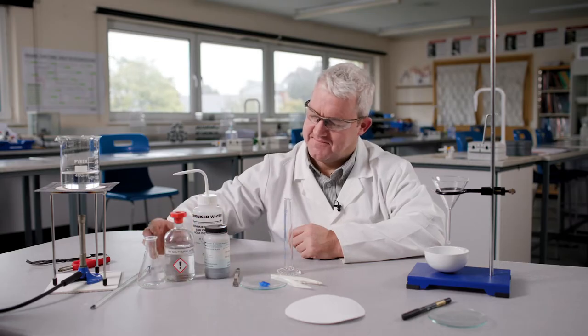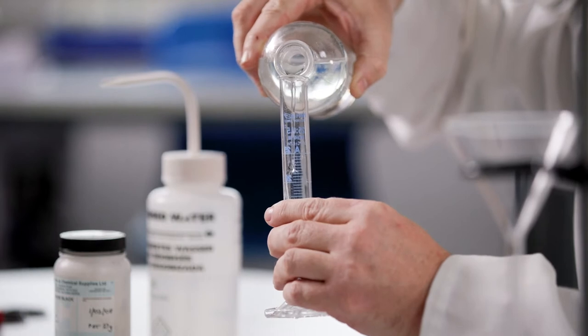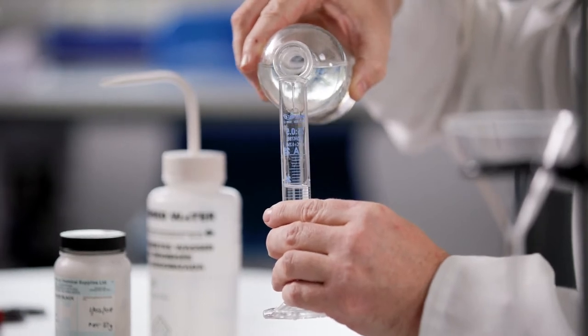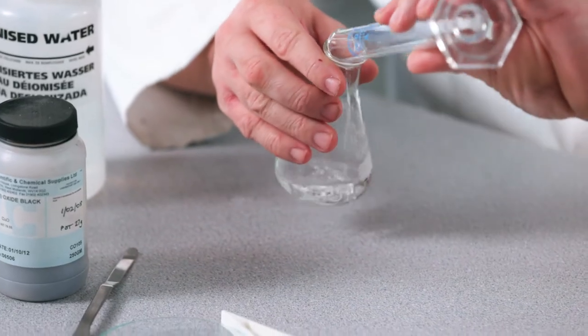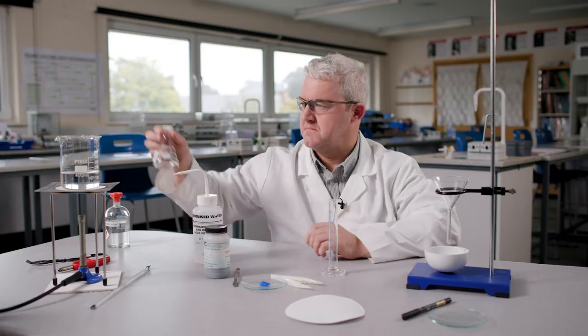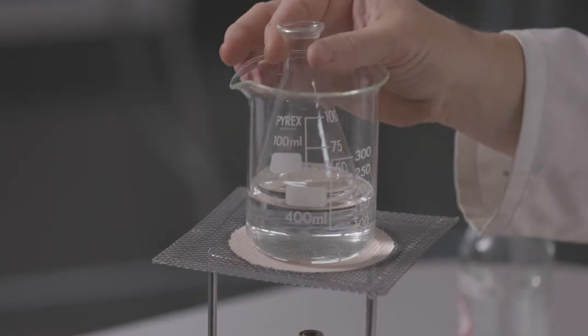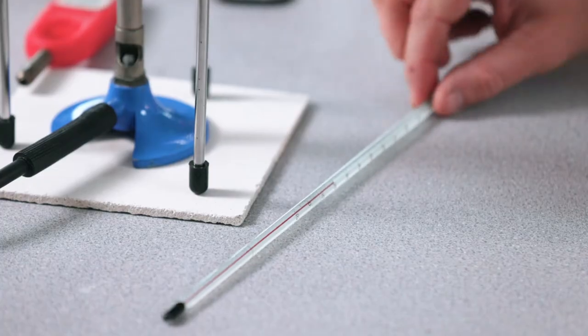To start off with, pour 20 centimetres cubed of 1 mole per decimetre cubed sulphuric acid into a measuring cylinder. Then add this to a 100 centimetre cubed conical flask. The reaction takes place faster at a high temperature, so place the conical flask in a bath of hot water at 50 degrees C.